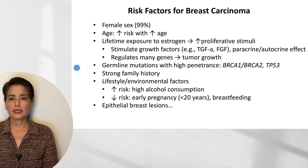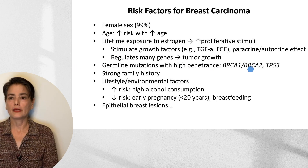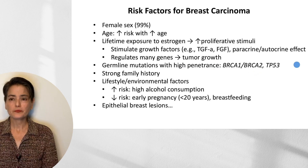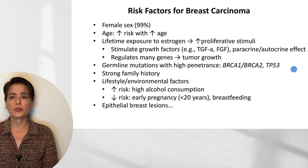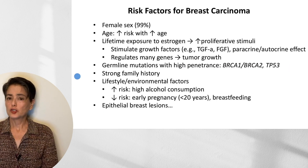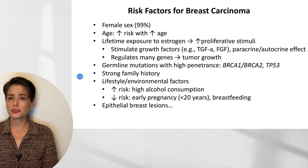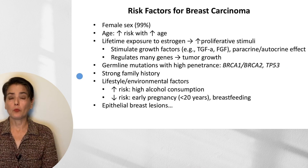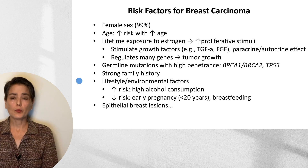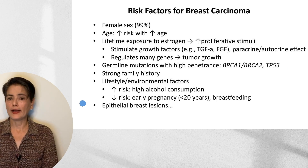In familial breast cancer, we get germline mutations with high penetrance, such as BRCA1, BRCA2, and TP53. I will discuss these in more detail in the next video on breast cancer pathogenesis. Strong family history is also associated with increased risk.